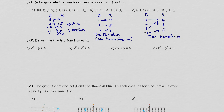Now let's look at equations to determine if they represent functions. The best way is to plug in a value and see how many y values you get. Replace x with a number and see what y is. For example, when x = 1: 1 squared = 1, and 4 minus 1 = 3. When x = -1: (-1)² = 1, and 4 minus 1 = 3. You get the same y, but only one y for each x, so this is a function.